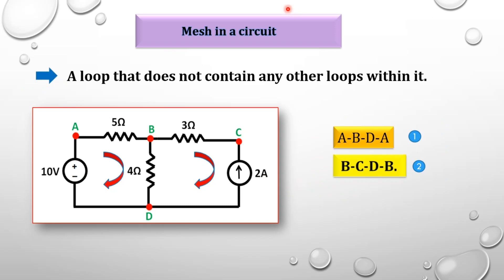Next, what is a mesh? A mesh is a loop that does not contain any other loops within it. So a mesh is essentially the smallest possible loop in the circuit. For example, loop A-B-D-A is a mesh because it contains no inner loops.